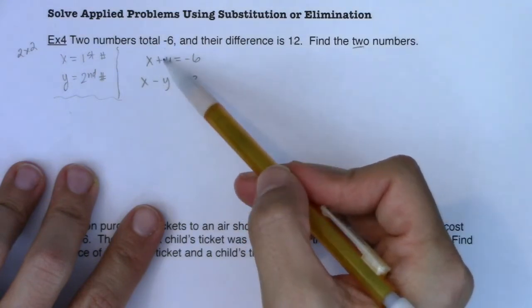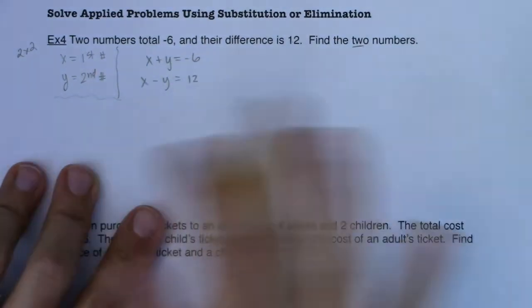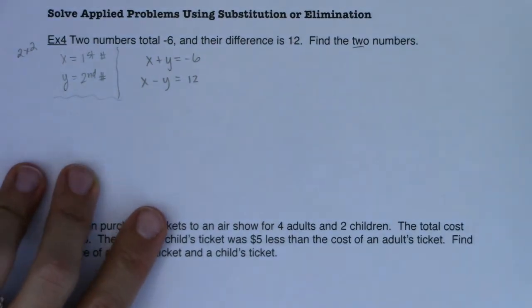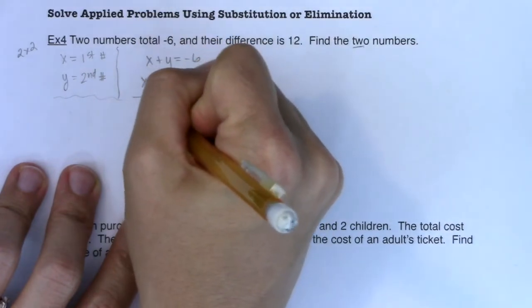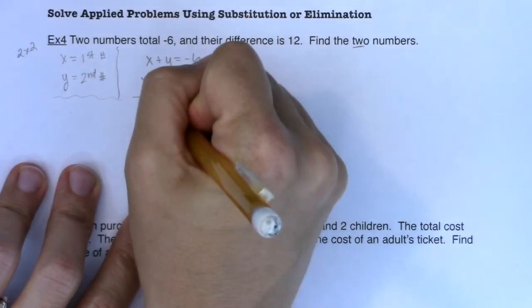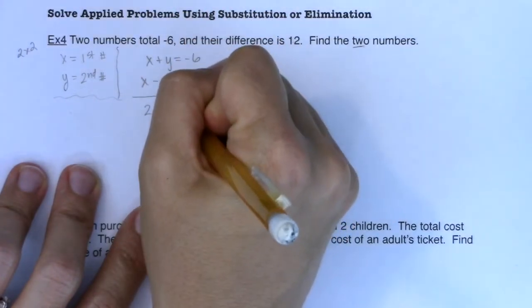they're opposite in sign but have the same coefficient. So that's ready for elimination. Let me add these equations together. X plus X is 2X. The Y's eliminate. Negative six plus 12 is six.